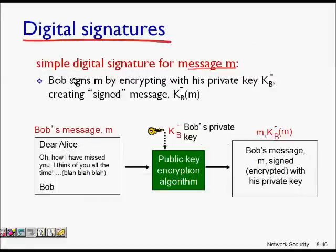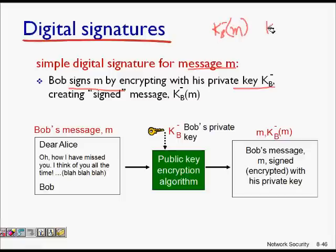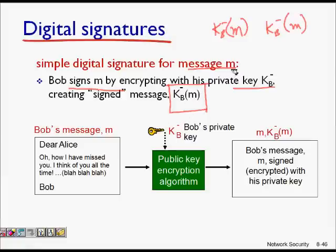In the network, for a simple digital signature for a message m, Bob signs the message by encrypting it with his private key kb minus. So Bob will encrypt the message m with his private key, and the signed message will be kb minus of m. Normally we encrypt with the public key, but here Bob is encrypting with his private key.